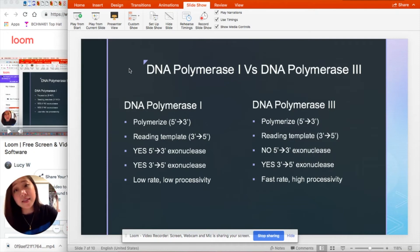And in this case, DNA polymerase one has a low rate, low processivity. DNA polymerase three has a fast rate, high processivity. High processivity means that it is capable of adding many nucleotides to the growing DNA strand without releasing the template.